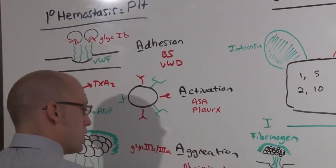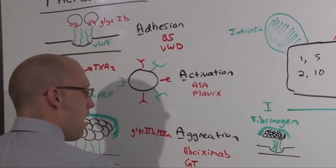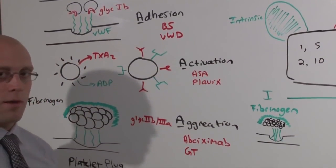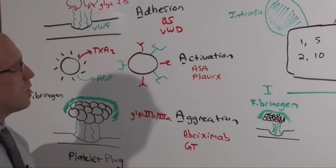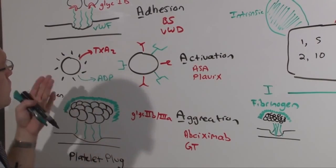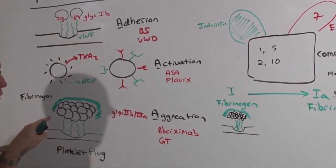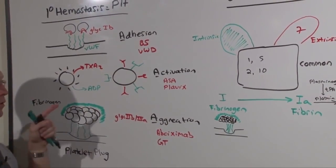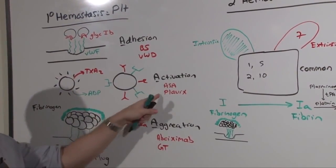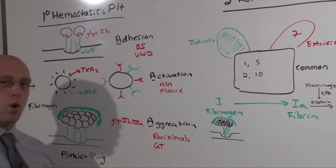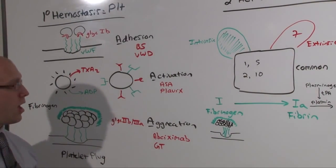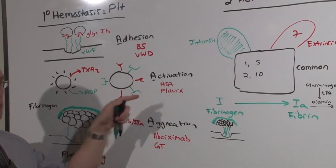Glansman's thrombastenia is the other one, which is essentially like having abciximab all the time. So you can see adhesion, activation, and aggregation. All three of these are the process by which the primary platelet plug forms, which is the substrate for fibrin clots. We can use medications or disease states in order to understand why they present with bleeding, and also why we give these to prevent thrombosis.